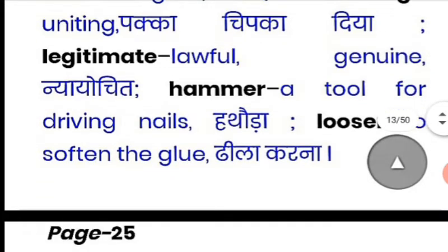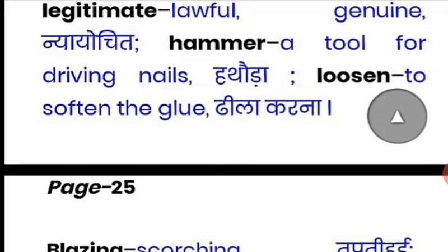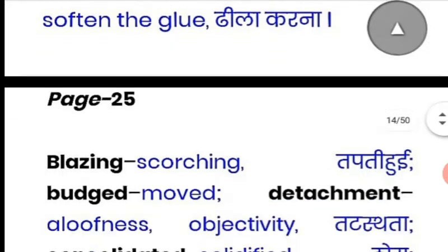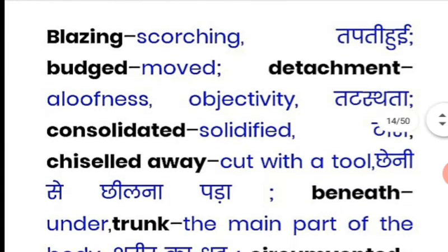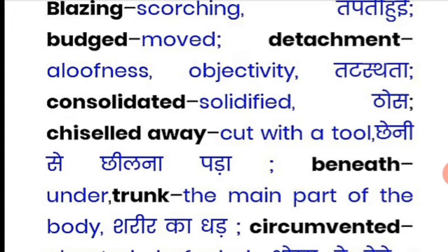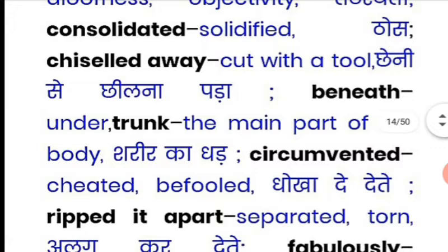'Legitimate' means lawful — something that is within the law. 'Hammer' is a tool for driving nails. 'Loosen' means to soften or make something loose. 'Blazing' means scorching, very hot. 'Buzzed' means to move around quickly. 'Detachment' means aloofness or objectivity. 'Consolidated' means to make solid. 'Cut with a tool' means to break something using a chisel. 'Beneath' means under. 'Trunk' is the main part of a body.